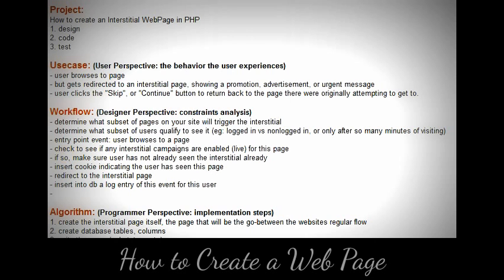We are fleshing out the details a little bit further here. A user browses to a page, and we have to determine whether to show them the interstitial or not. The first thing we do is check if there is even an interstitial campaign that is live right now, because it could be disabled or enabled at this particular point in time. The code will check that, and if there are interstitial campaigns running, we move to the next check.